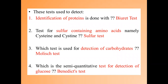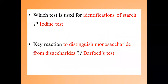First, I'll discuss some tests. For identification of protein, biuret test is done. For sulfur containing amino acids, sulfur test is done. For detection of carbohydrate, Molisch test is done. For detection of glucose, Benedict's test is done. For identification of starch, iodine test is done. And to distinguish between monosaccharides from disaccharides, Barford's test is done.